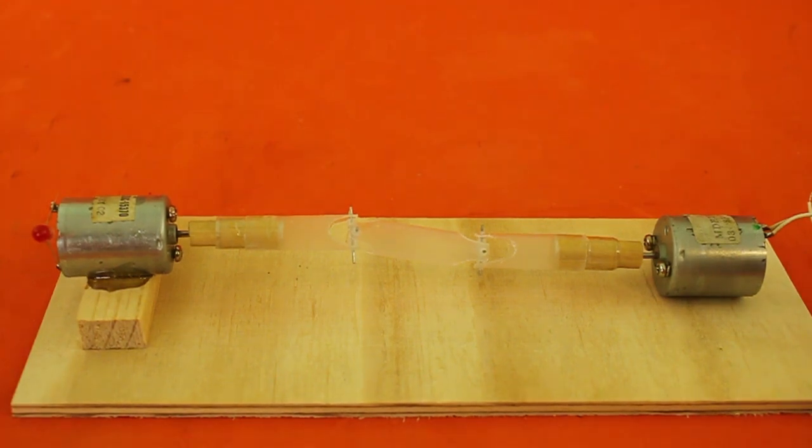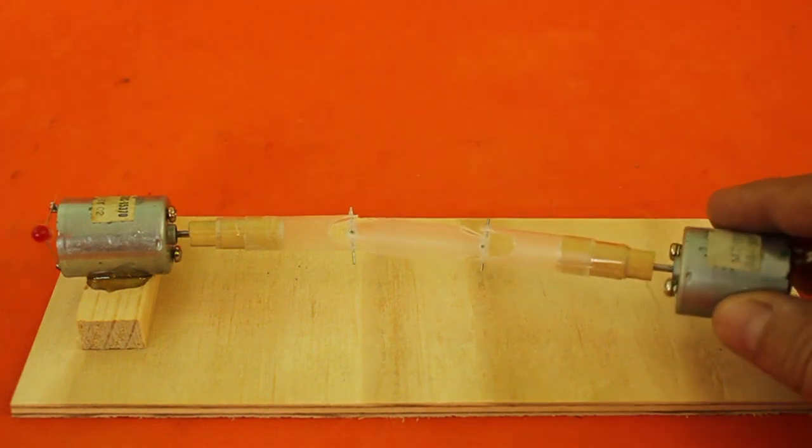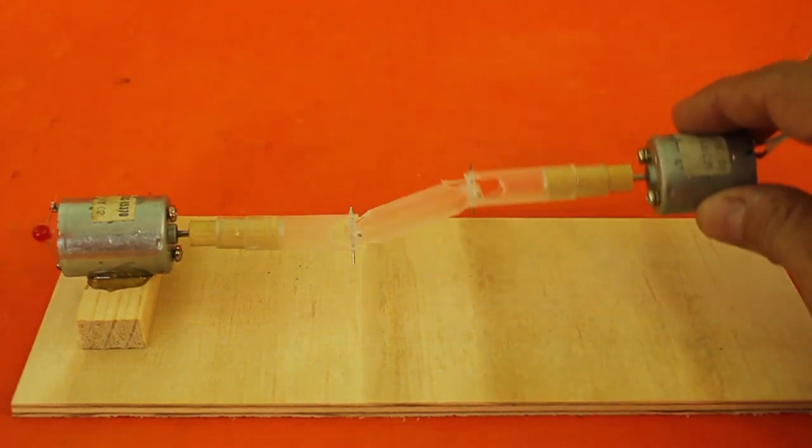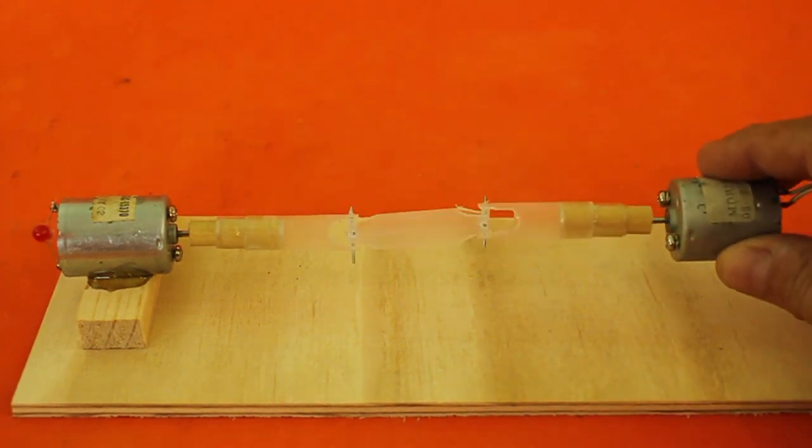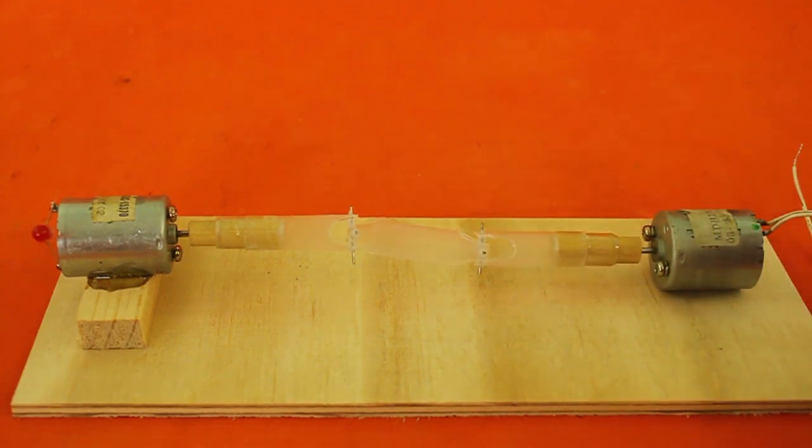The cardan, also known as universal joint, is used when we need to transmit power between two shafts that are not aligned with each other. In this case we will transmit power from this electric motor to this other that acts as a generator.